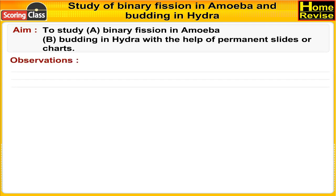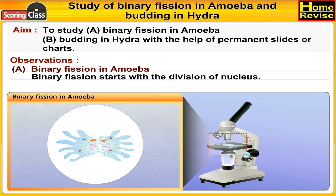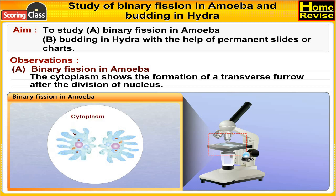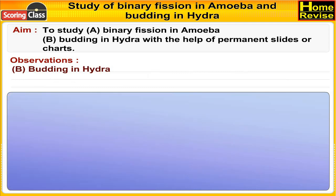Observations. A) Binary fission in amoeba: binary fission starts with the division of the nucleus. The cytoplasm shows the formation of a transverse furrow after the division of the nucleus. This furrow deepens and divides the amoeba into two daughter amoeba.